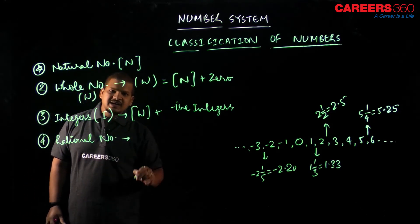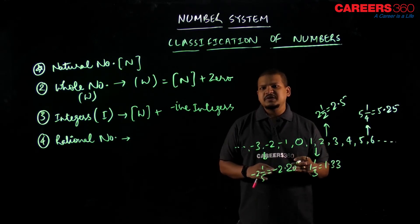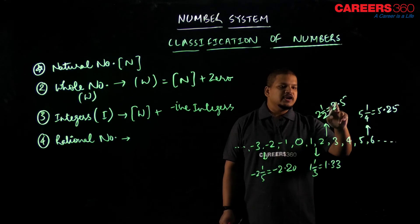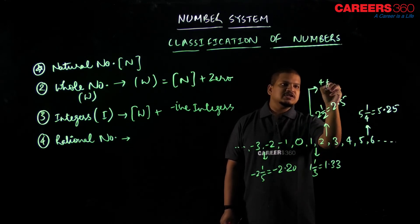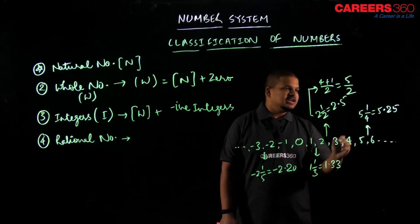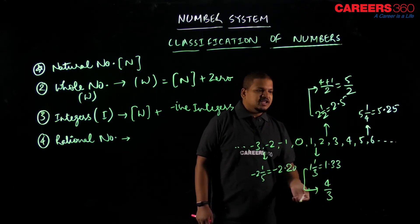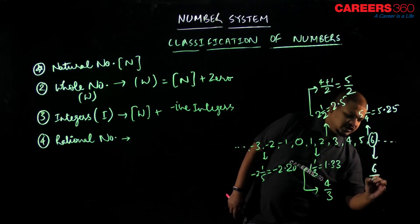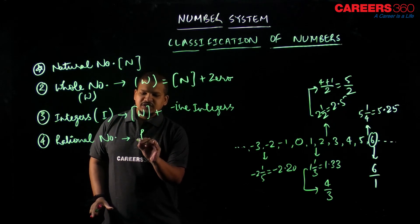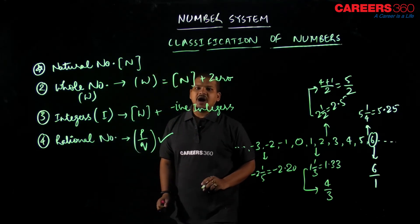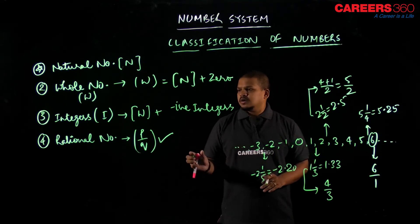Rational numbers — the definition is as simple as it looks: all the numbers which can be written in the form of p/q are rational numbers. For example, 2.5 can be written as 5/2, and 1 and 1/3 can be written as 4/3. Similarly, 6 can be written as 6/1. So all numbers that can be written in the form of p/q are known as rational numbers.